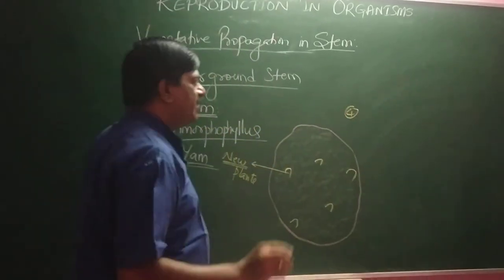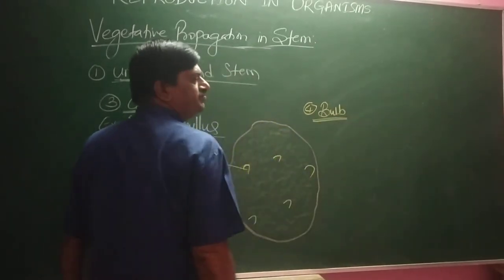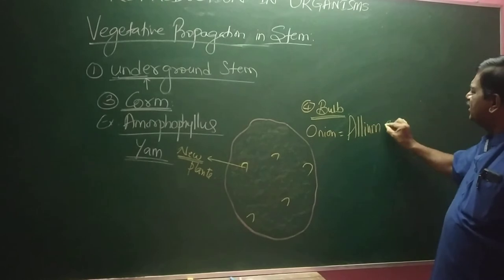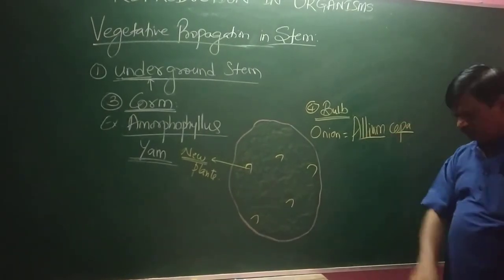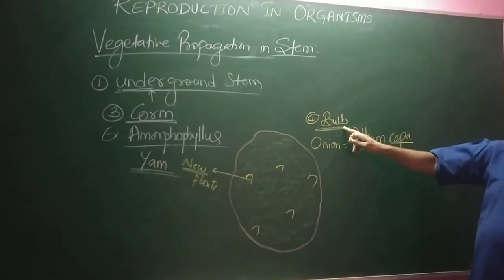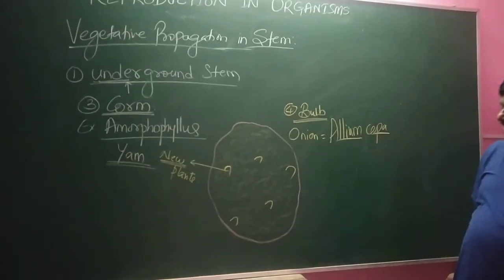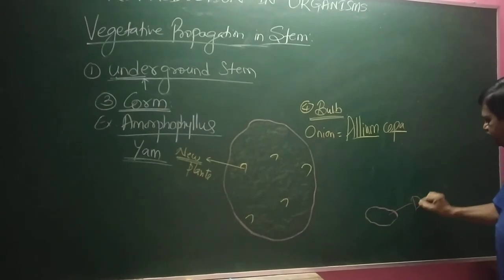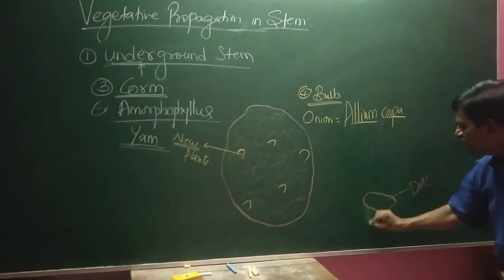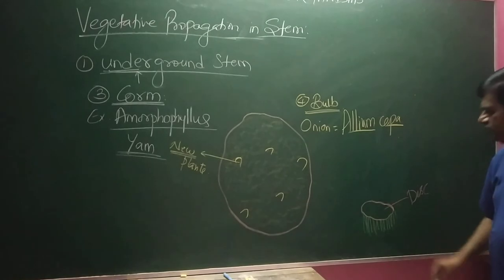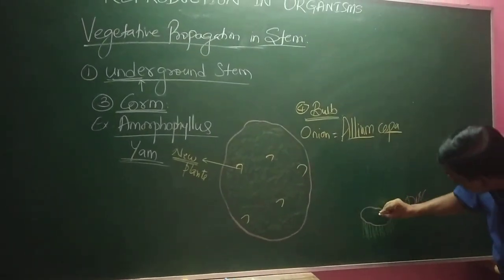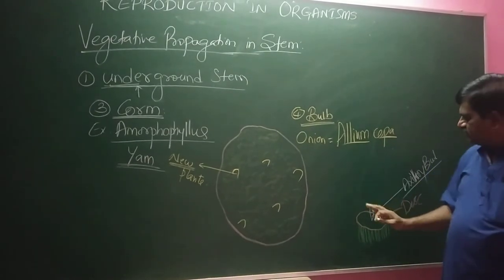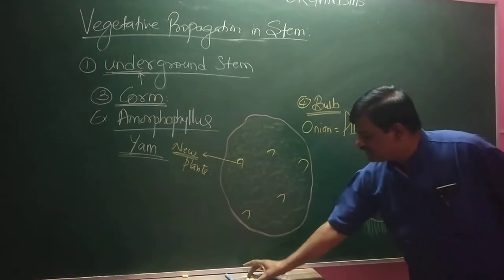The next type is called Bulb. Example is Onion — Allium cepa. Onion's underground stem, called a bulb, also helps in vegetative propagation. In onion, there is a lower disc-like stem. This disc-like stem has the presence of adventitious roots. At the center of the stem there is a presence of an axillary bud, which is sometimes white and sometimes yellow in color.